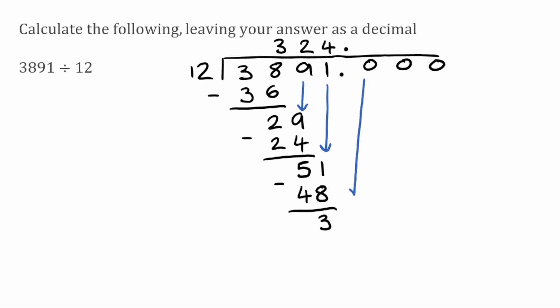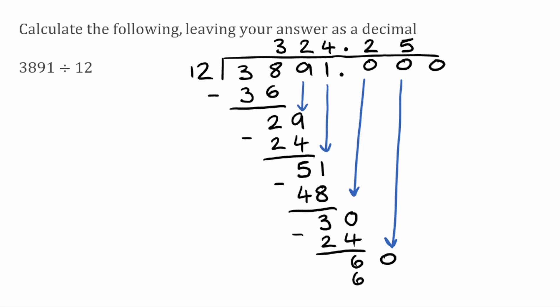I'll use 3 zeros for this example. We bring down the first zero to get 30. How many times does 12 fit into 30? Twice, because 2 times 12 is 24. 30 take away 24 leaves 6. Bringing down the next zero gives us 60. How many times does 12 fit into 60? Five times exactly, because 5 times 12 is 60. Remainder zero — we're done. The final answer to 3891 divided by 12 is 324.25.